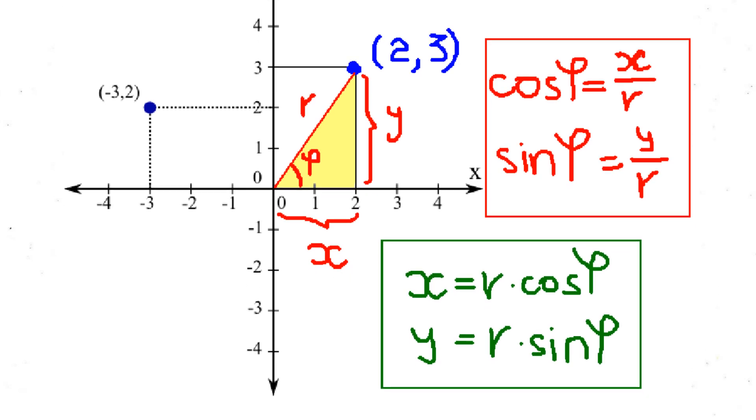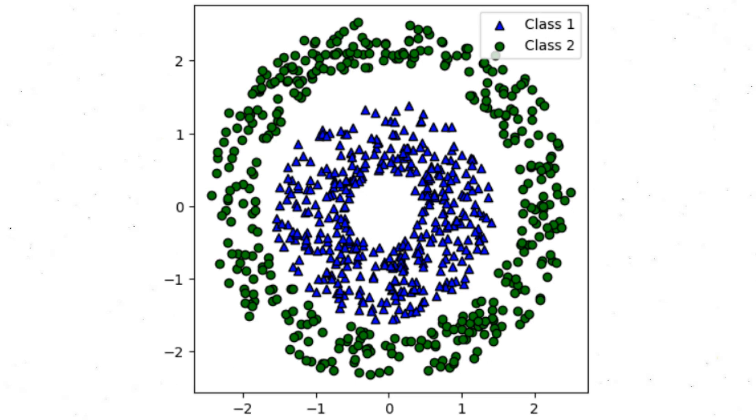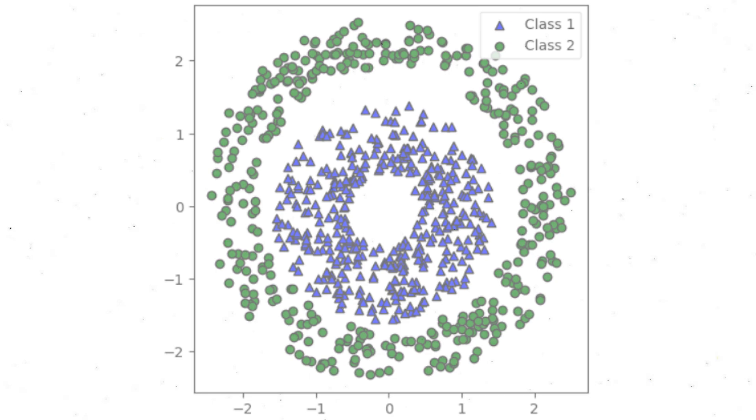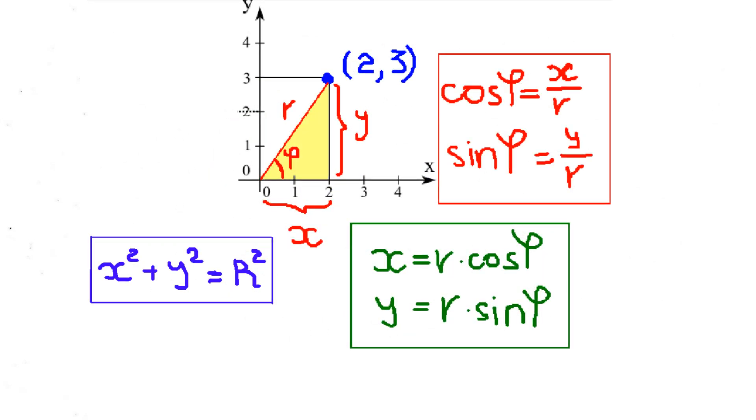Returning to our task, observe that our data consists of numerous circles with a bit of noise. Let's use an equation for a circle. Assuming the center of our circle is the same as the origin of our coordinate system, this equation looks like this: x squared plus y squared is equal to r squared, where r is the radius of the circle.